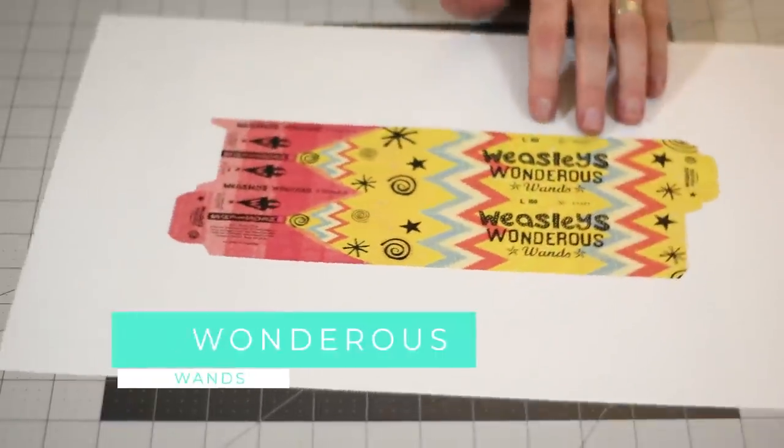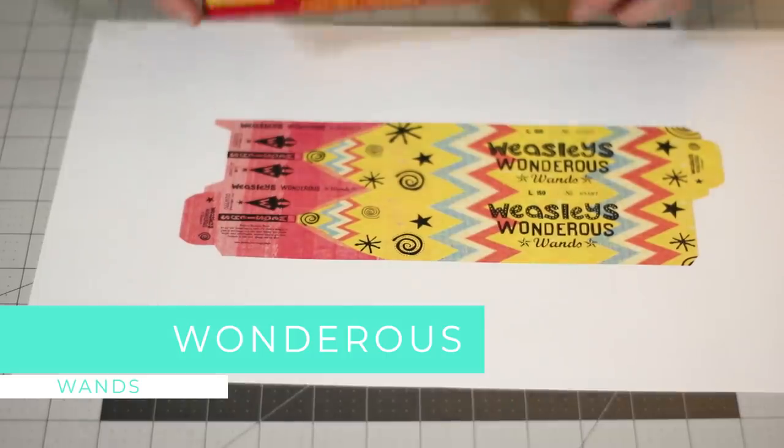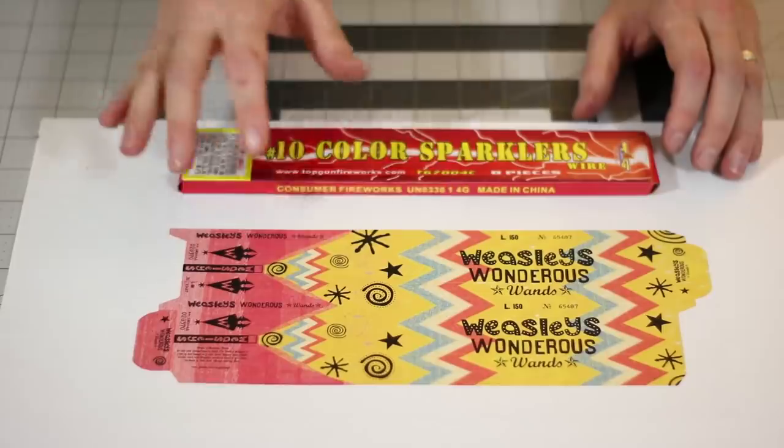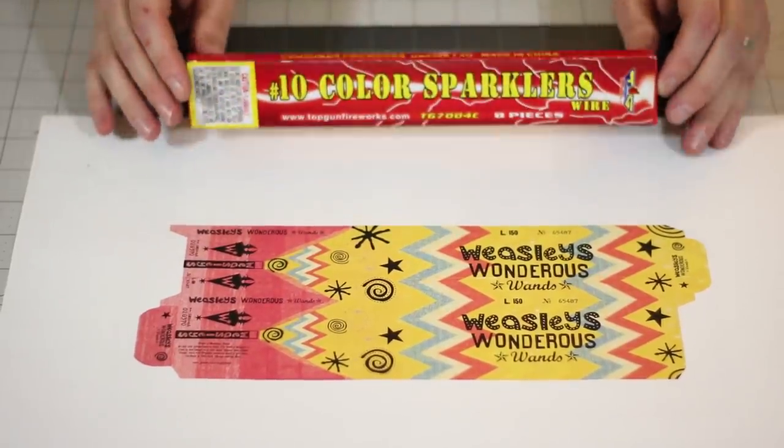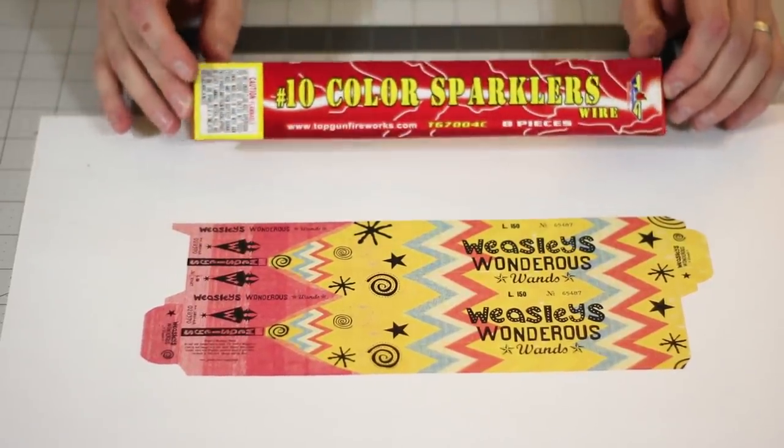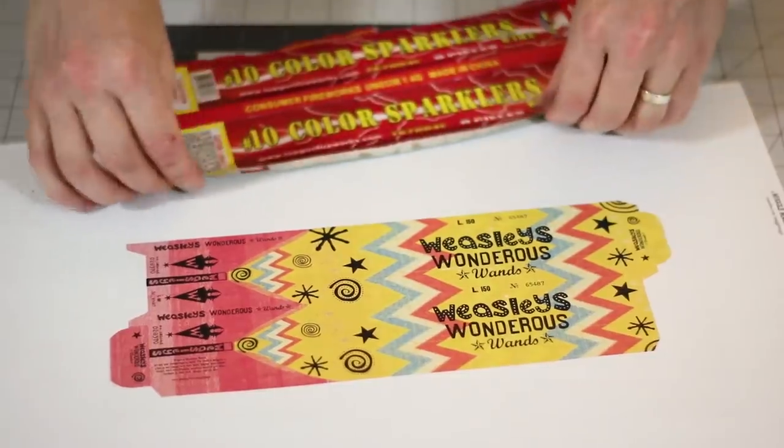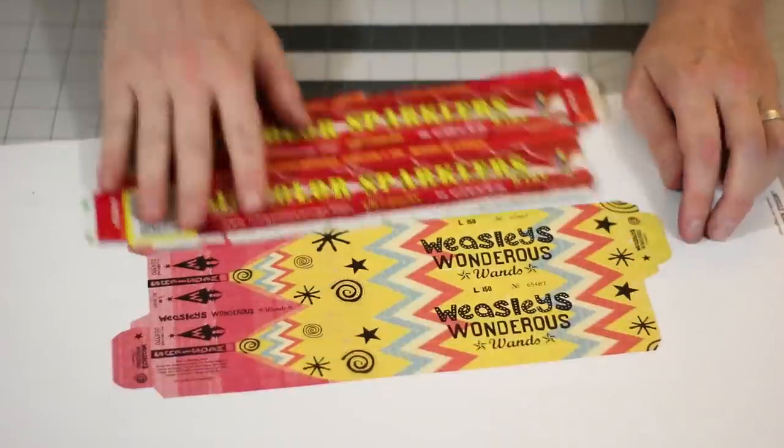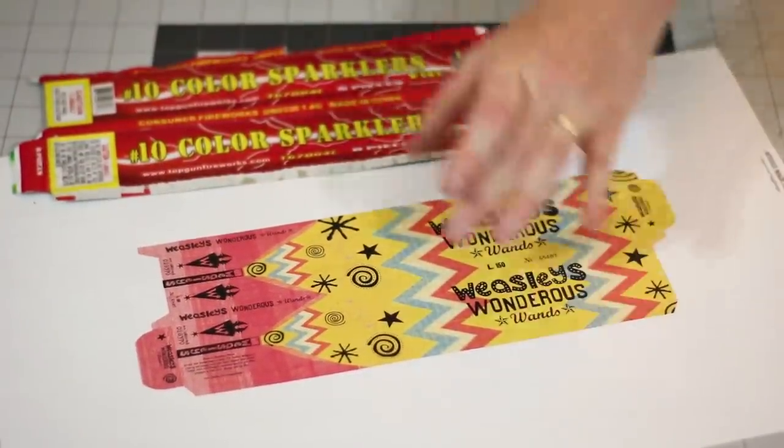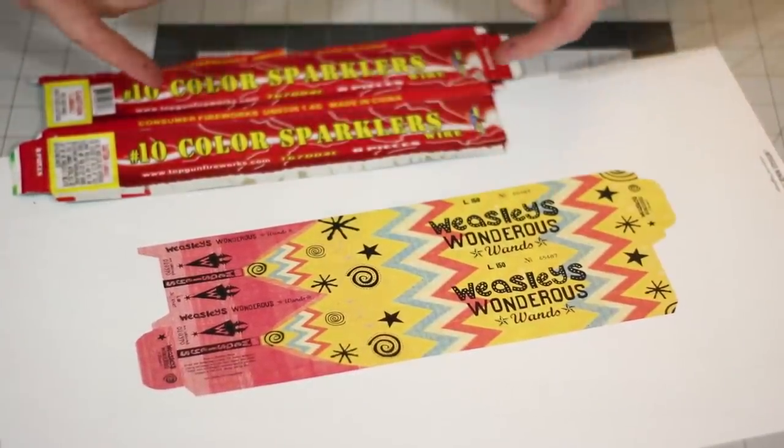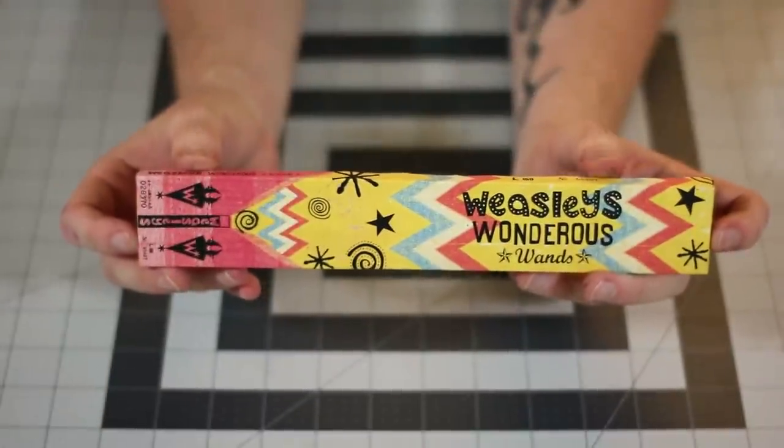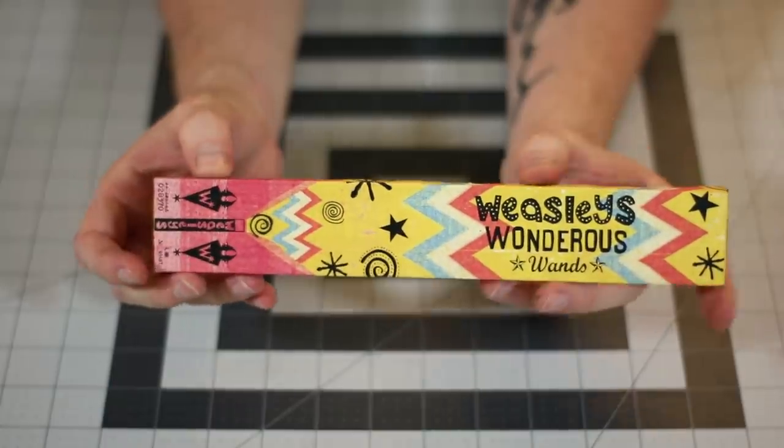Next, we'll be doing Weasley's Wondrous Wands. We're going to basically convert a box of sparklers into this. This is the exact same as we did for the snakes. I hope this box is the same. It's definitely the same brand. Yeah, this one looks perfect. So basically, just cut this out and glue it on, and then reconstruct the box in the same way that we did for the snakes. The rebranded box should turn out looking like this.